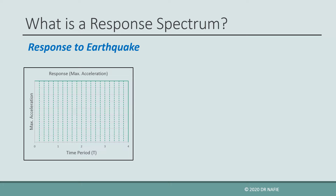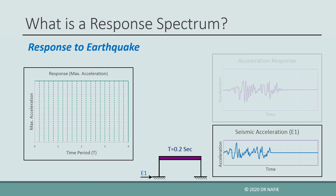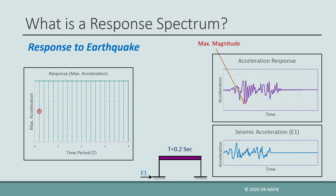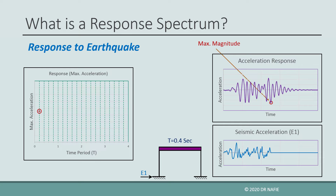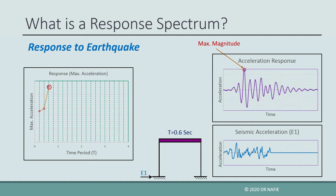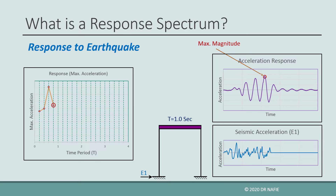To demonstrate this fact, we need to draw a graph between the time period T and the maximum absolute acceleration that occurs in the structure. Consider a single degree of freedom building with mass M, where the height of the building is adjusted to produce a natural time period of 0.2 seconds. We subject this building to a specific earthquake E1, then solve the structure to obtain the maximum acceleration and record this value on the graph. Next, we change the height of the building without changing the mass so that the time period becomes 0.4 seconds, and resolve the problem to obtain the new maximum acceleration. We continue this process by changing the natural time period, and each time we solve to find the maximum acceleration to complete the graph.